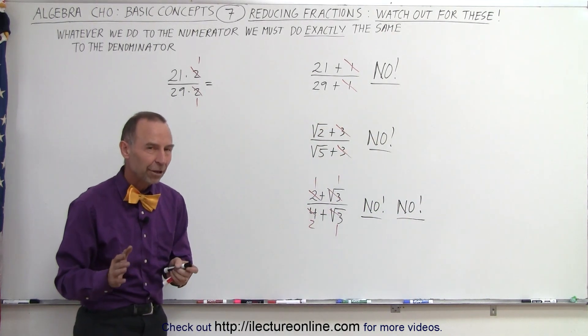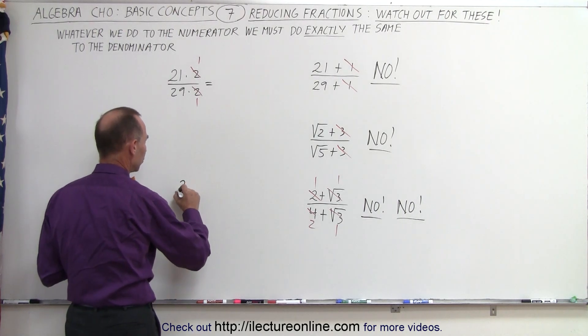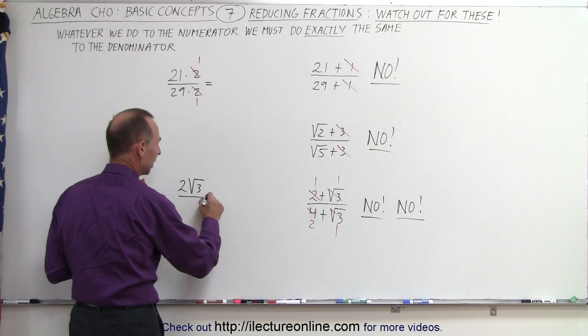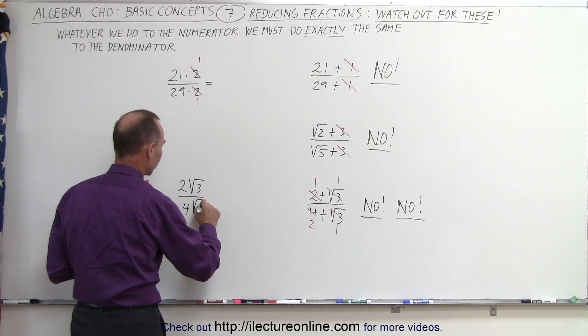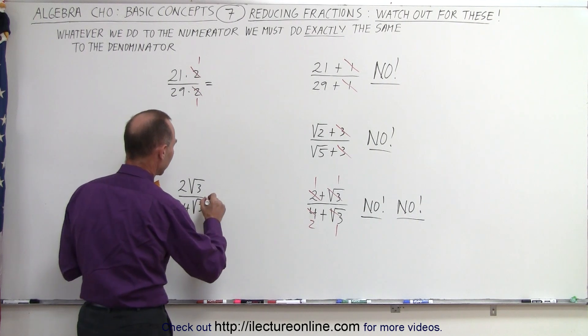We can only do that if they are multiplied together, if they are factors. For example, if we have 2 times the square root of 3 and 4 times the square root of 3, then we can say, first of all, we can divide both the numerator and the denominator.